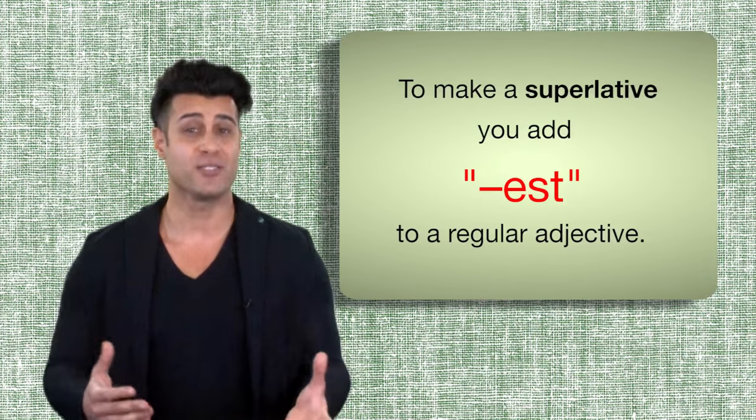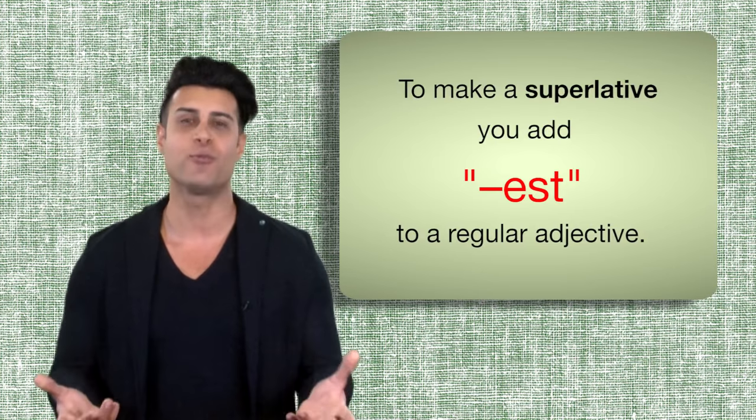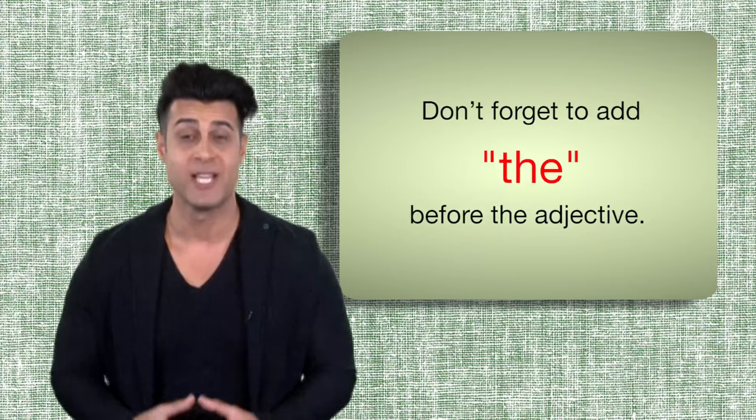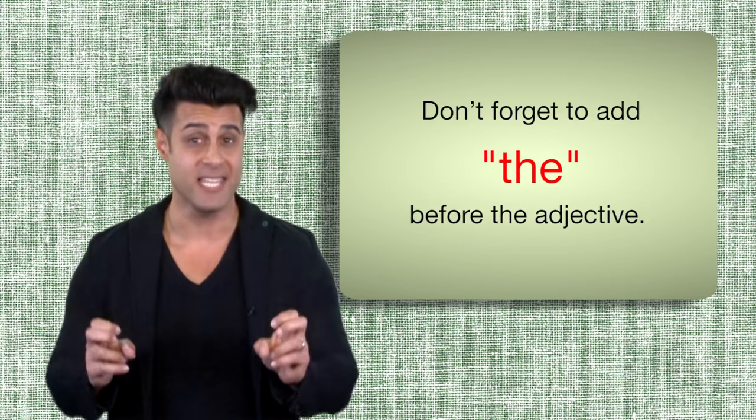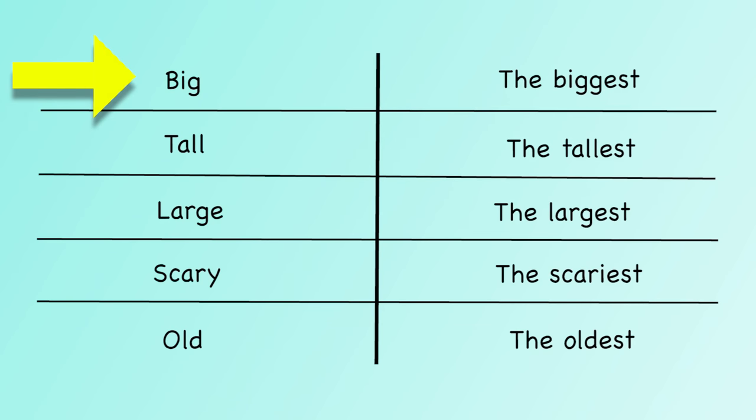To make a superlative, you add EST to a regular adjective. Don't forget to add THE before the adjective. Big, the biggest. Tall, the tallest. Large, the largest. Scary, the scariest. Old, the oldest.